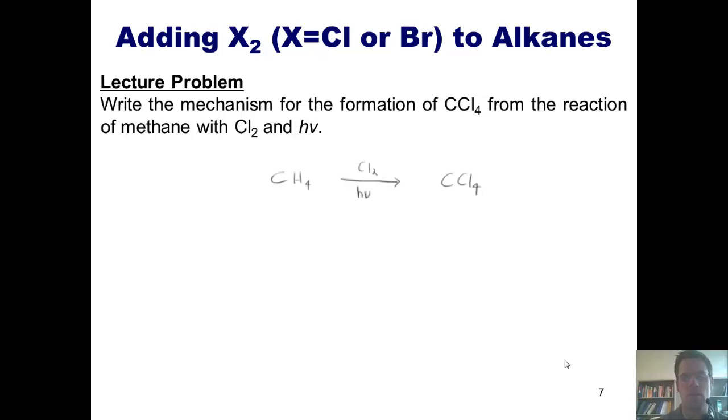So here's the overall reaction, converting methane, this molecule here, to carbon tetrachloride using chlorine gas and light. How in the world does that proceed? Well, as I've showed you before, the first step is initiation. I've got my chlorine gas, and each of these separate chlorine atoms takes one of these two electrons to itself, as indicated here using these half-barb arrows, to form two separate molecules of chlorine radical. This is the initiation step.